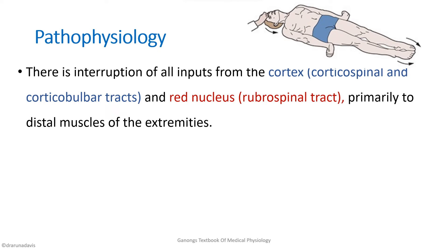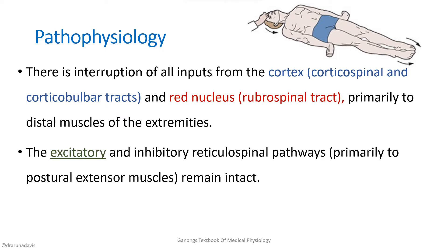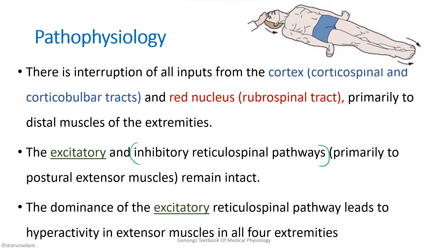When writing the answer, you can state: there is interruption of all inputs from the cortex — corticospinal, corticobulbar, and red nucleus — primarily to the distal muscles of the extremities. The excitatory and inhibitory reticulospinal tracts remain intact, but the inhibitory reticulospinal tract no longer receives cortical support. This results in dominance of the excitatory reticulospinal pathway, leading to hyperactivity in the extensor muscles of all four limbs — producing the extended posture of decerebrate rigidity.